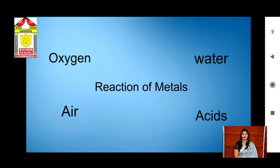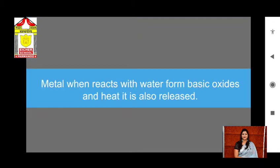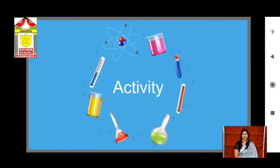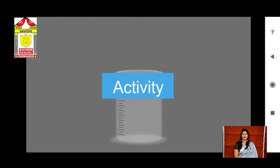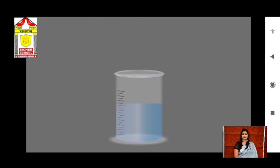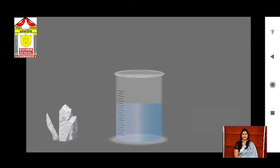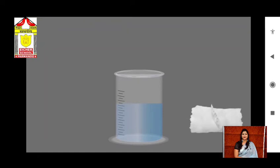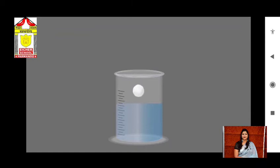Now let's see the reaction of metals with water. Metals react with water to form basic oxides and heat is also released. For this activity, take a beaker of 250 ml and fill it half with cold water. Now carefully cut a small piece of sodium metal, make it dry with the help of a filter paper, and keep it in the folds of filter paper. Then place it in a piece of cotton and put it in the beaker.